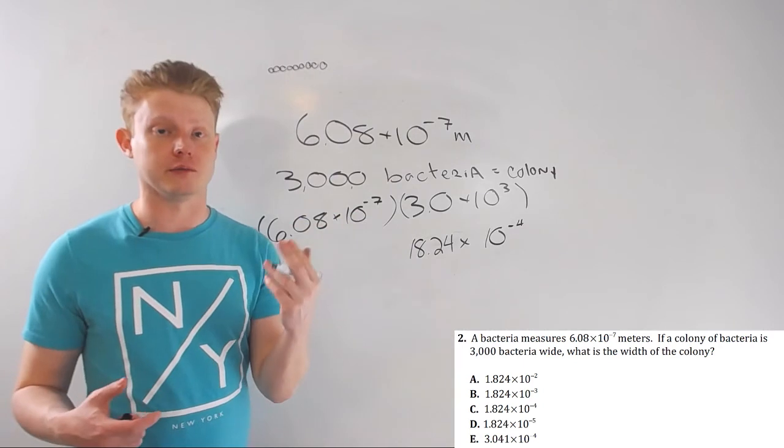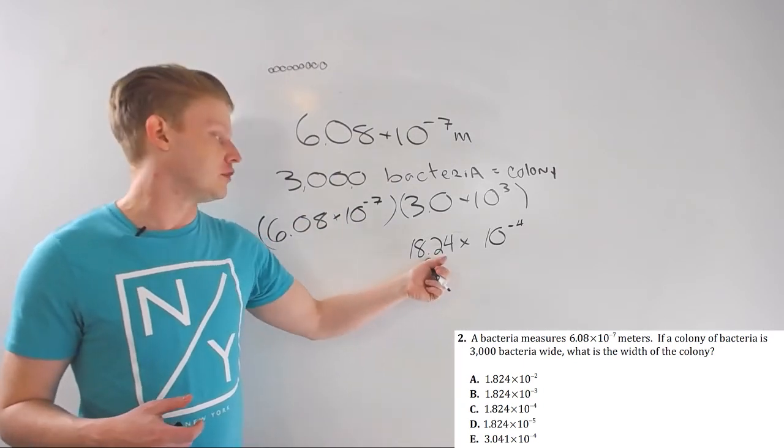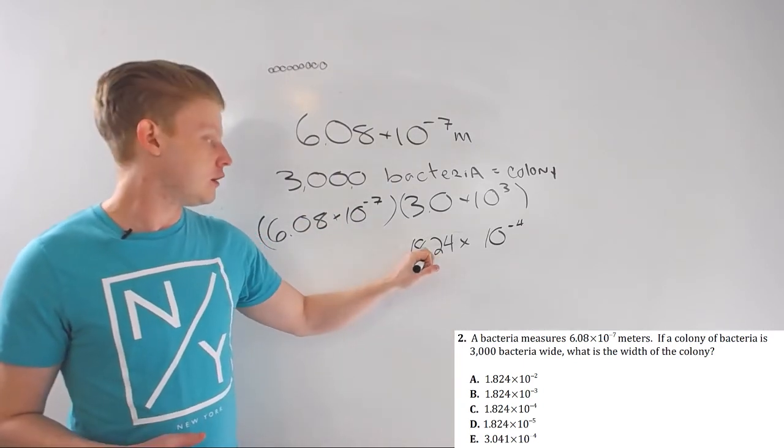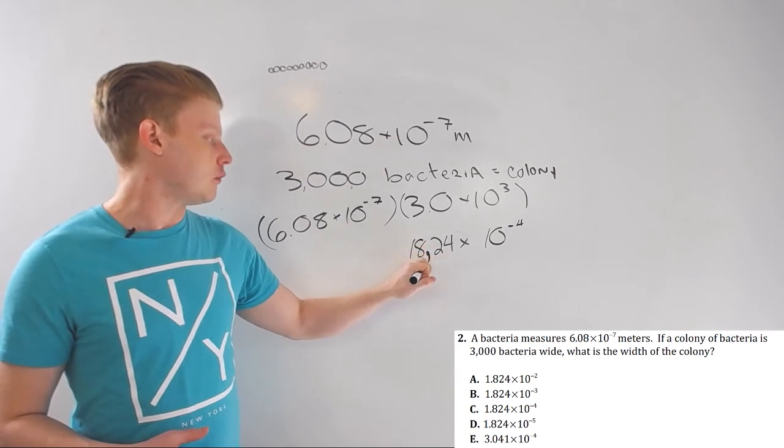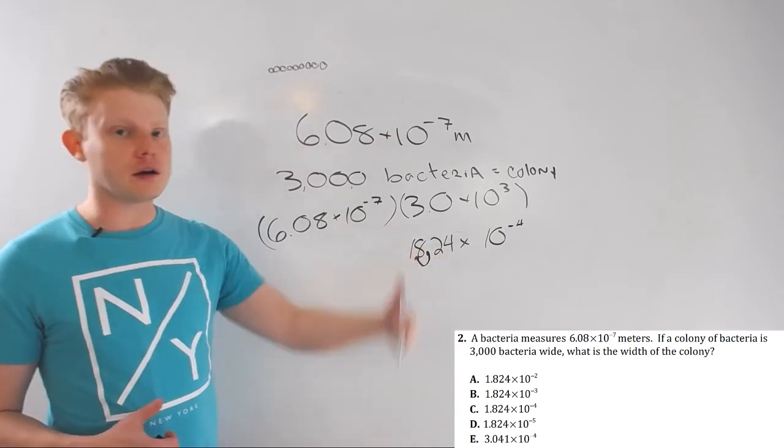Because remember, it's got to be one decimal. One number to the left of the decimal, I should say. So, again, I'm making this number smaller. So, I'm going to increase my exponent.